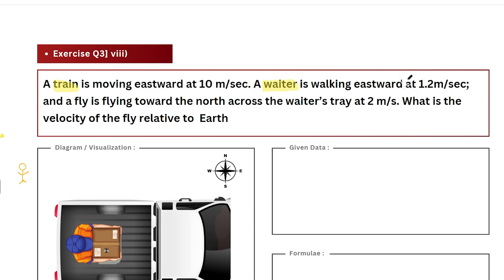This waiter is carrying a tray, and on that tray we have a third object — a fly — which has a certain type of motion. In these three motions, we have a certain velocity given for each. Based on that, we have to calculate the velocity of the fly such that if we were to observe that motion from earth, what will the fly's velocity be?